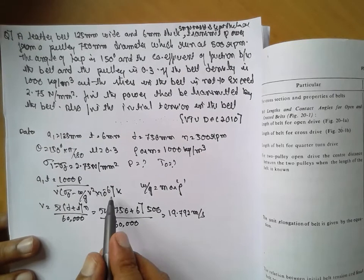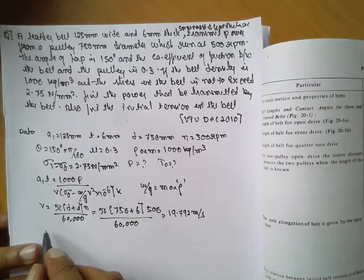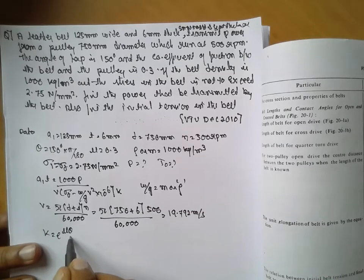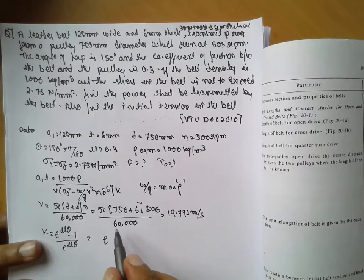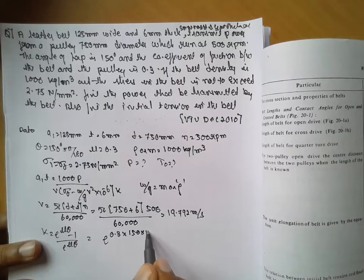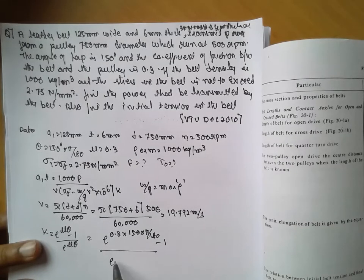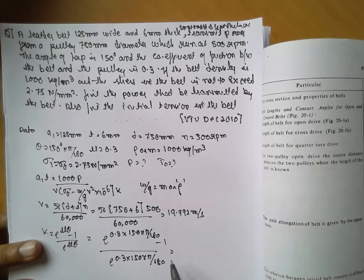Next, after knowing the velocity, find k. The formula is: k = (e^(mu × theta) − 1) / e^(mu × theta). Substituting mu = 0.3 and theta = 150 × pi/180, the answer for k is 0.544.